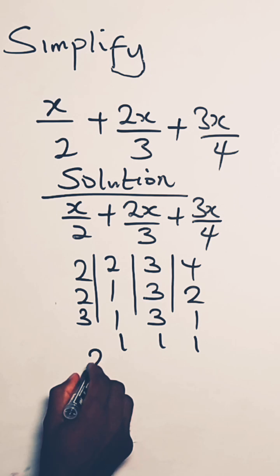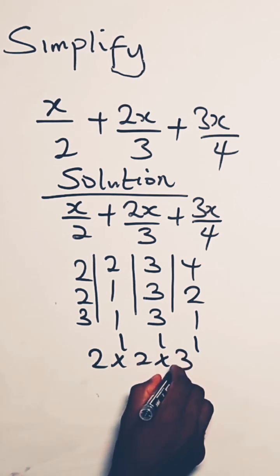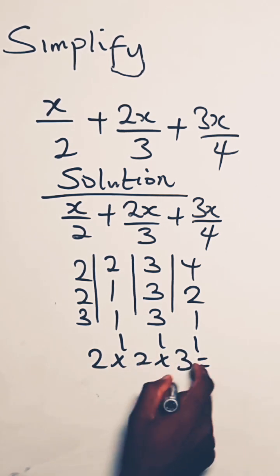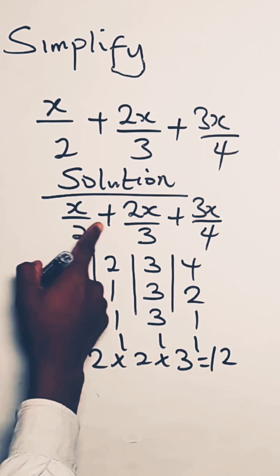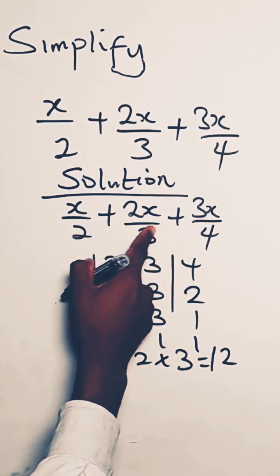So the LCM is 2 times 2 times 3. 2 times 2 is 4. 4 times 3 is 12. So we multiply 12 with every part of the fraction.